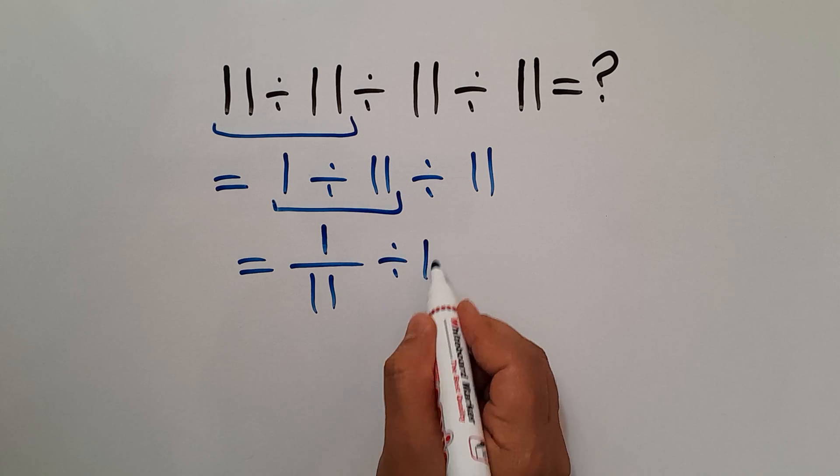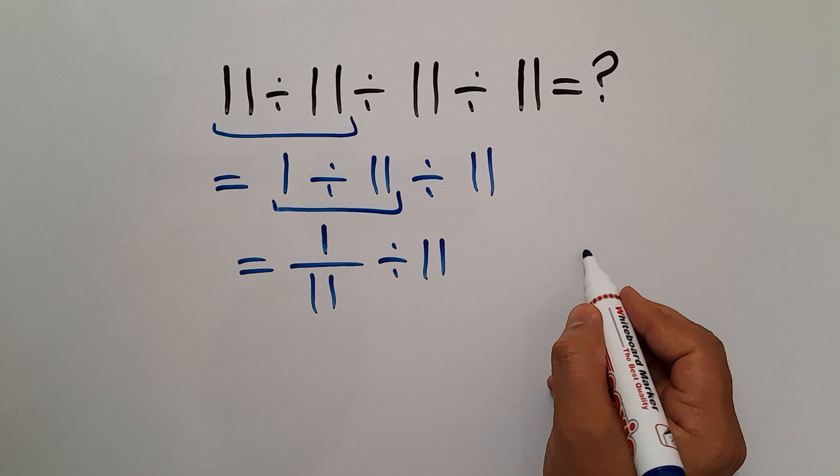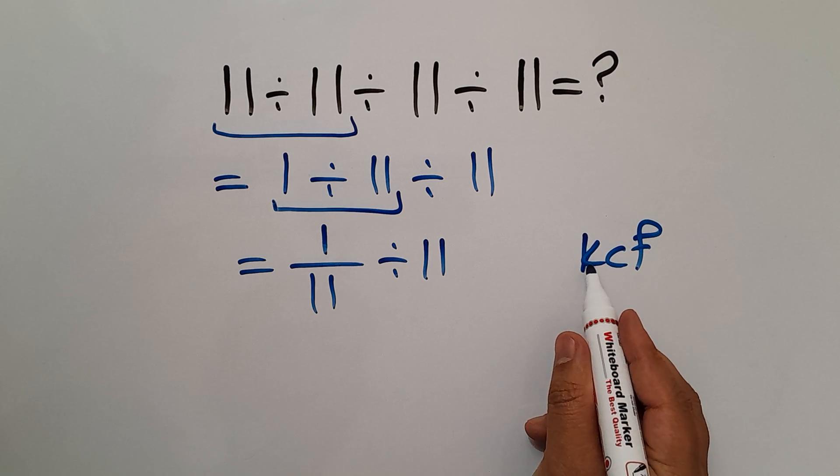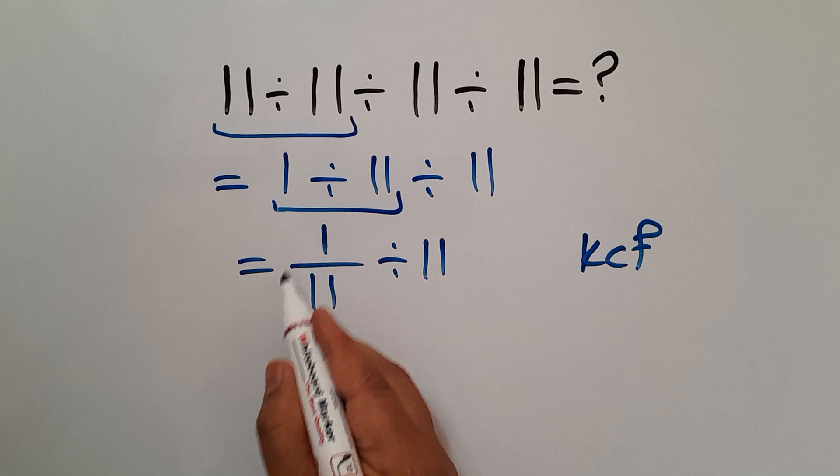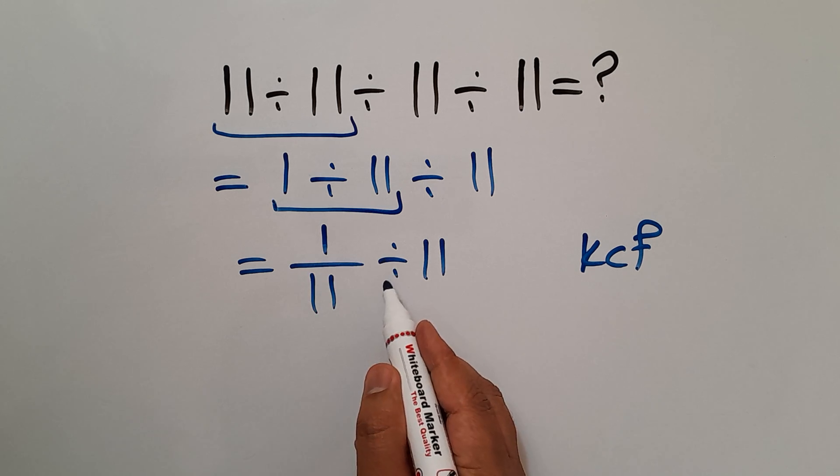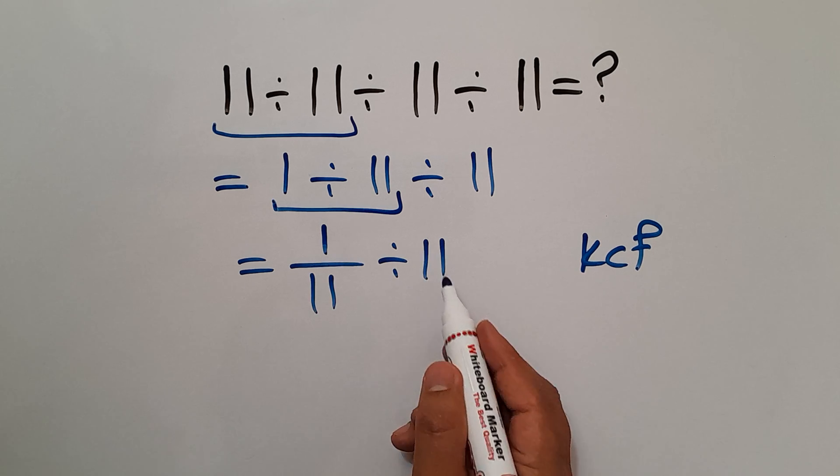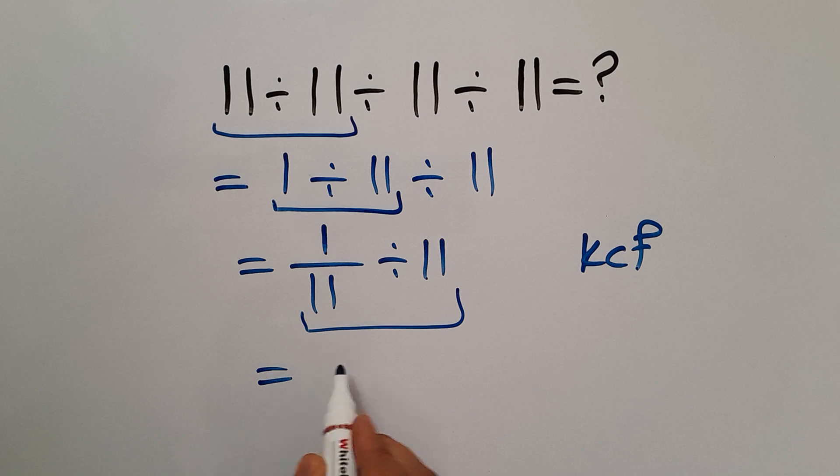Now according to the KCF rule: K stands for Keep, C stands for Change, and F stands for Flip. Keep the first fraction, change division to multiplication, and flip the second fraction. So we can write 1 over 11 times 1 over 11.